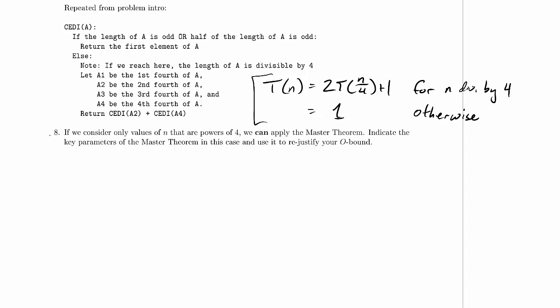If we consider only values of n that are powers of 4, we can apply the master theorem, indicate the key parameters of the master theorem in this case, and use it to re-justify our O bound. Remember, our O bound was square root of n, so we're hoping to come up with the same thing when we reapply the master theorem here.